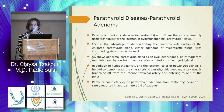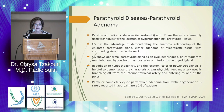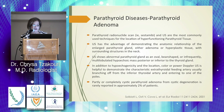Parathyroid radionuclide scan (sestamibi) and ultrasound are the most commonly used techniques for localization of hyperfunctioning parathyroid tissue. Ultrasound has the advantage of demonstrating the anatomical relationship of the enlarged parathyroid gland — either adenoma or hyperplastic tissue — with surrounding structures in the neck. Ultrasound allows visualization of abnormal parathyroid glands as oval or bean-shaped, or infrequently multilobulated hypoechoic masses posterior or inferior to the thyroid gland. Color or power Doppler is helpful to demonstrate the characteristic extra-thyroidal feeding artery, usually branching off from the inferior thyroid artery and entering one of the poles.